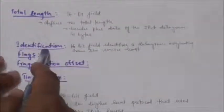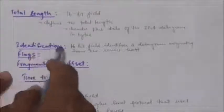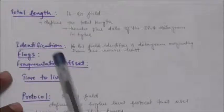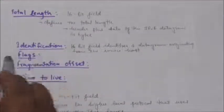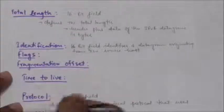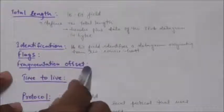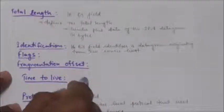The next field is Identification — a 16-bit field that identifies a datagram originating from the source host. The Flags field and the Fragmentation Offset field will both be studied in the next tutorial when we cover fragmentation.